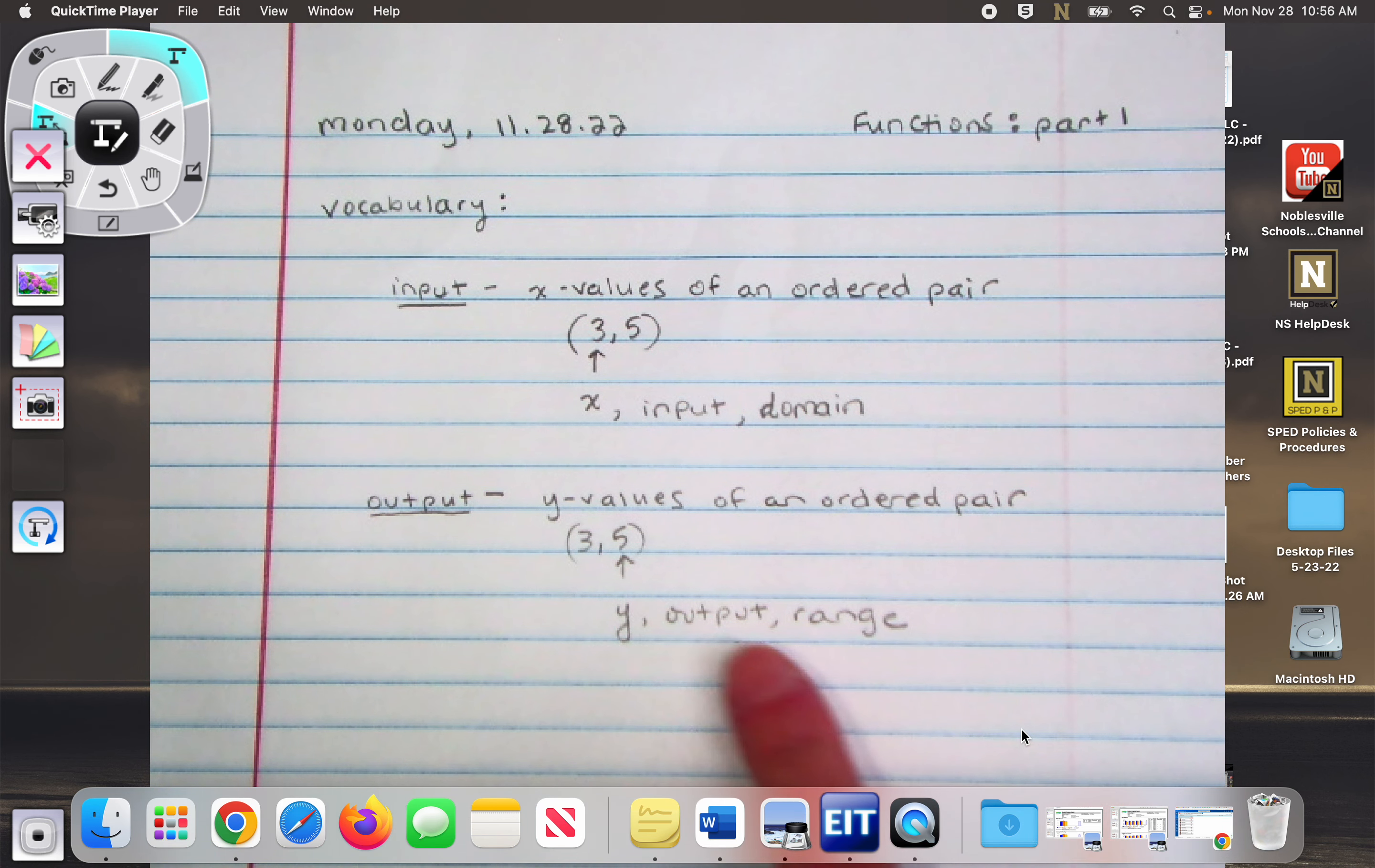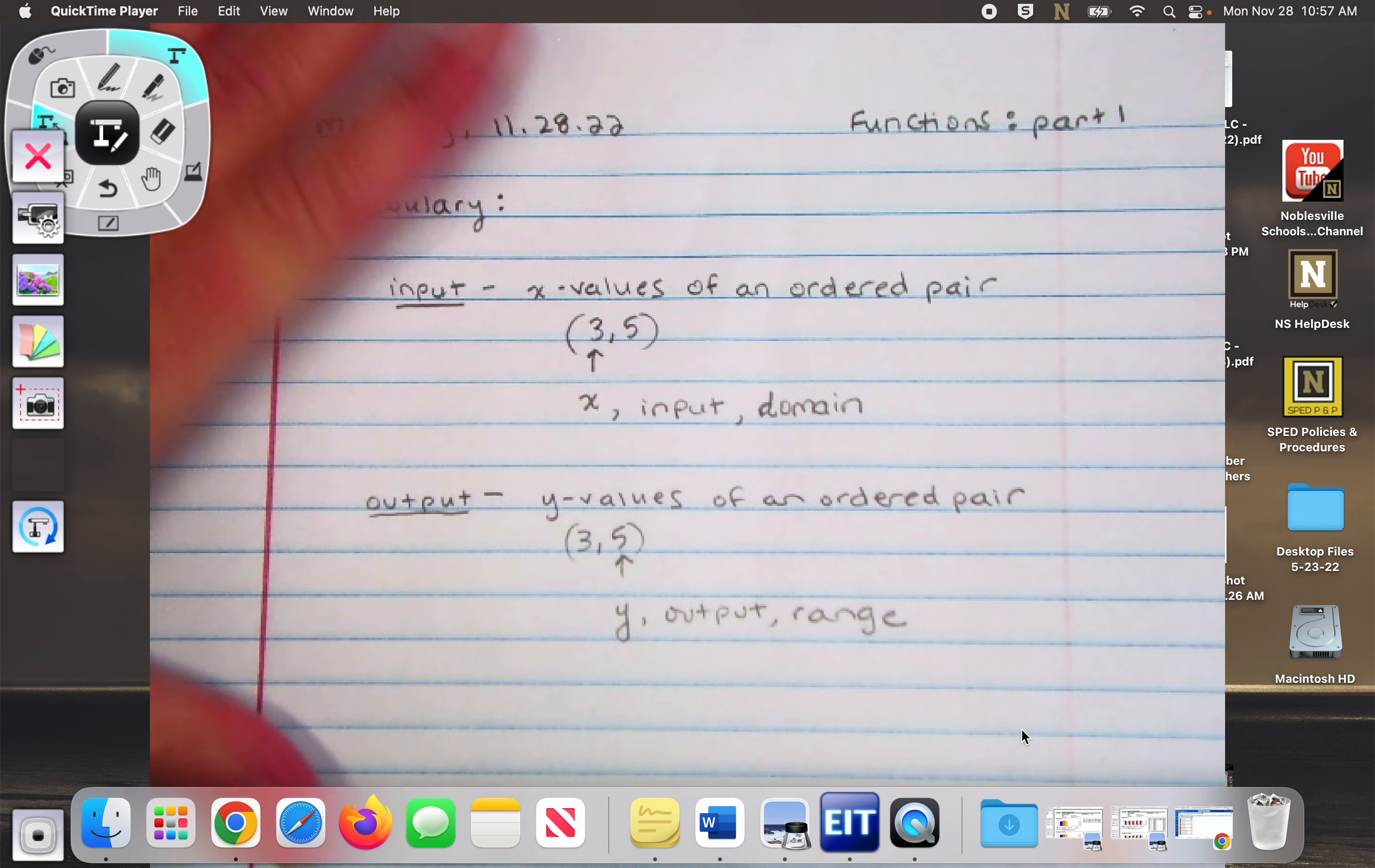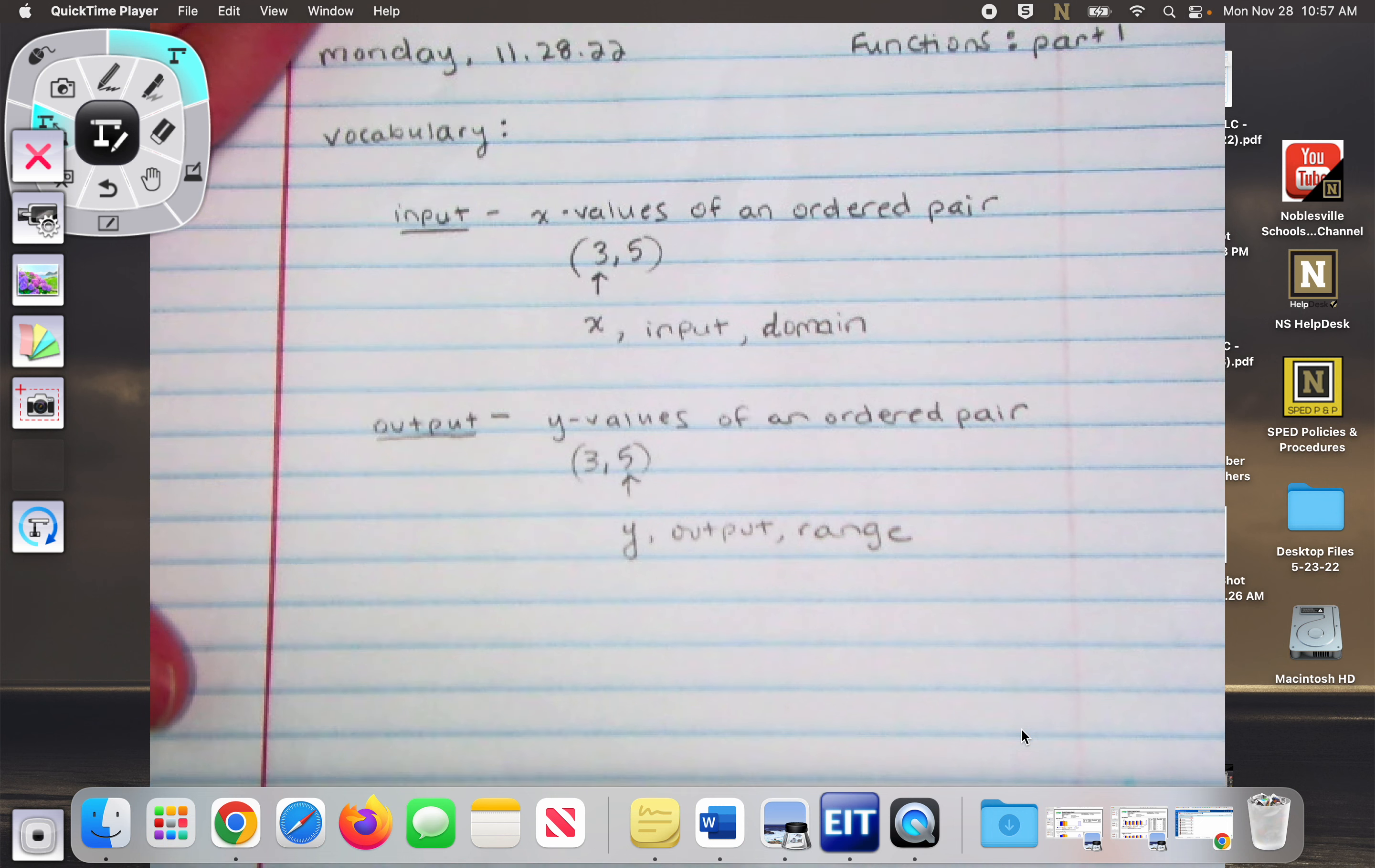Ordered pair? Domain. D-O-M-A-I-N. So domain is another word for input or x value. So they're all synonyms, right? Okay.